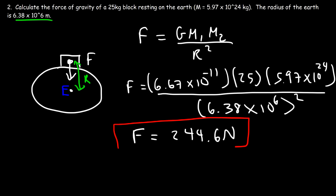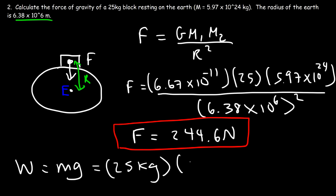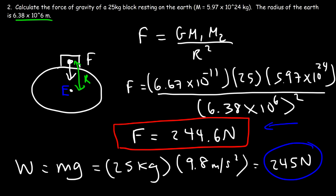It turns out that the gravitational force is simply the weight force of the object. The weight is simply mass times the gravitational acceleration. So we have a 25 kilogram mass, and the gravitational acceleration on the earth is 9.8 meters per second squared. So it's 25 times 9.8, and you get about 245 newtons. So these answers are about the same. This is the easiest way to find the weight force of an object on any planet if you know the gravitational acceleration of that planet.